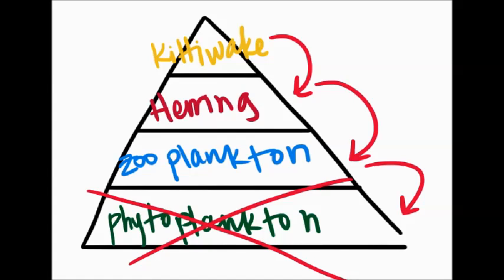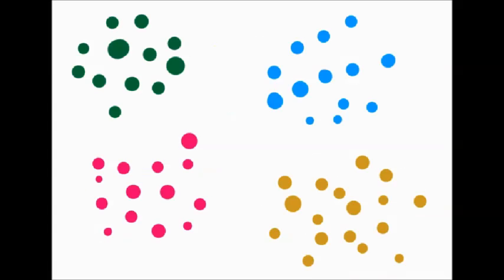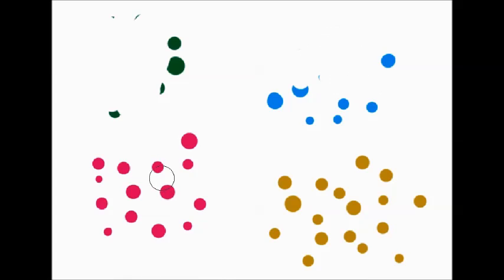With less phytoplankton, there is less food for the zooplankton. The zooplankton have less food to eat, so their abundance will decrease. Likewise, less zooplankton will mean less food for the herrings and less herrings. And finally, less herrings will mean less food for the kittywags and less kittywags. This overall decrease in food at each level reduces the abundance of each animal at each trophic level.